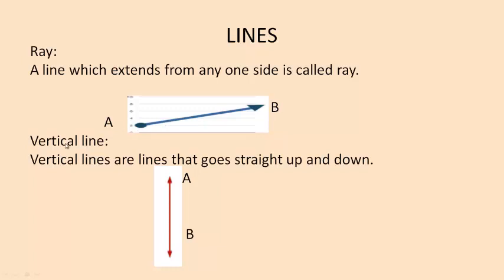Next, vertical line. Vertical lines are lines that go straight up and down. AB is a vertical line.